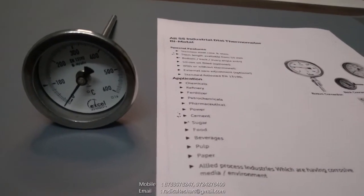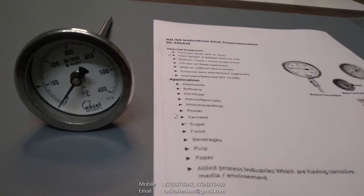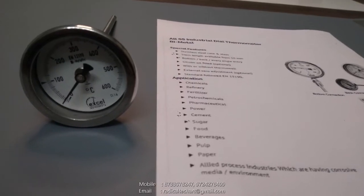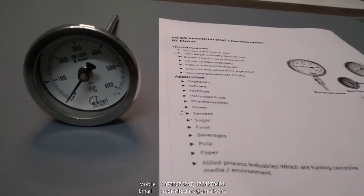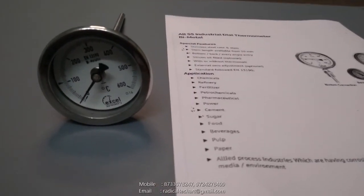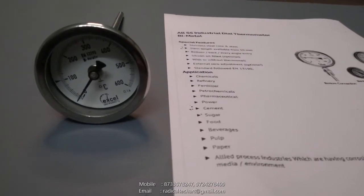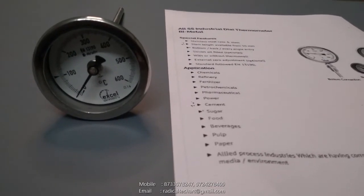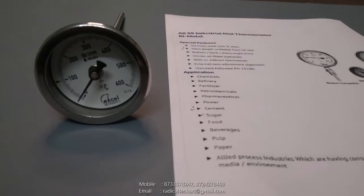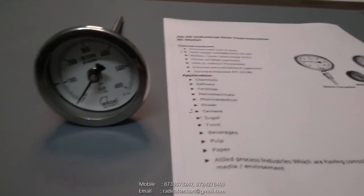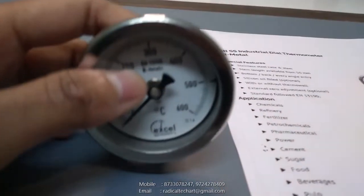Normally the dial sizes are DN 50, DN 63, DN 80, DN 100, DN 125, and DN 150 available with this bi-metallic temperature gauge. Also accuracy frequency is CL 1.0 as per EN 13190, you can see here it is mentioned.